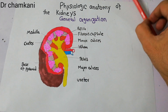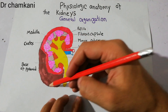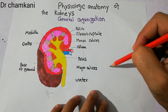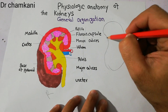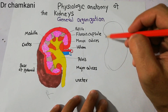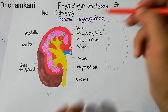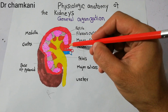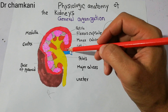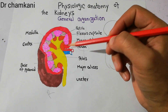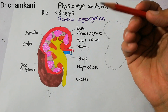The kidneys are facing each other. This is the medial side, this is the lateral side, and this is basically the right kidney. The left kidney is present like this, and there is a dent on the medial aspect known as the hilum, which is also present in the right kidney. The hilum basically provides entrance and exit for the renal artery, renal vein, lymphatic vessels, and different nerves.